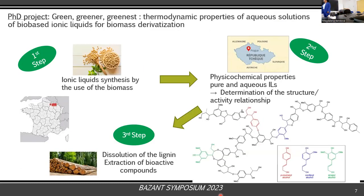My PhD is composed of three steps. The first step is the synthesis of ionic liquids using biomass — all the ionic liquids are from choline, and the choline comes from soy. I do that in Reims. Then I go to Prague here at ICPF to do the determination of the physicochemical properties of pure and mixed ionic liquids, and to determine the relationship between structure and activity. When I have done all of this, we select the best candidate for dissolution of lignin and extraction of aromatic components.